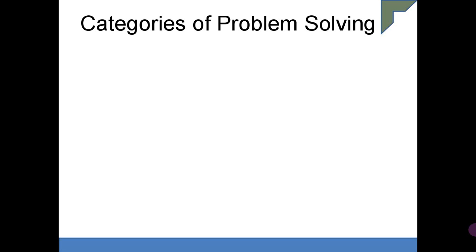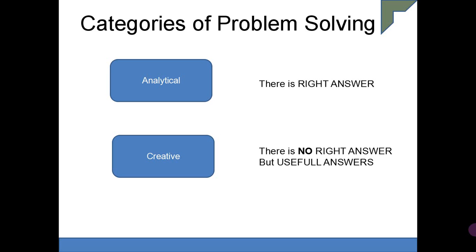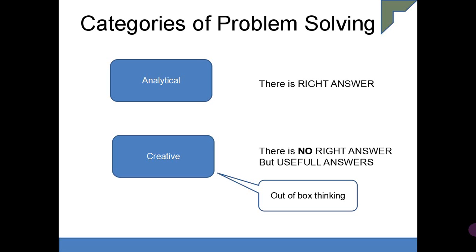Now we move to categories of problem solving. First is analytical problem solving. Typically, as a fresher sitting for an interview, they look for your analytical skill. In analytical problem solving, there will be a right answer — for example, 2 plus 3 equals 5. The other category is creative problem solving — in this, there is no single right answer, but you will get some useful answers associated with it. Creative problem solving is nothing but out-of-box thinking.